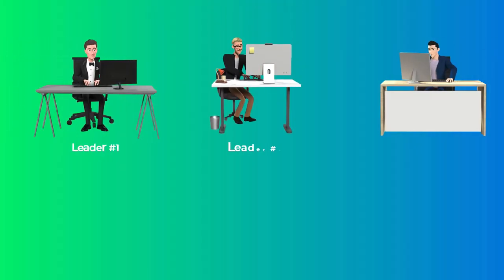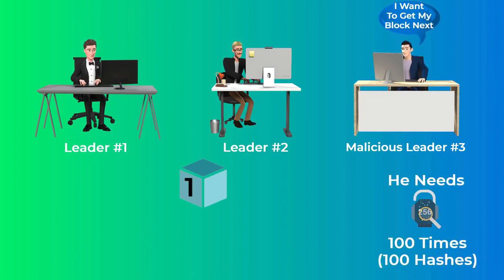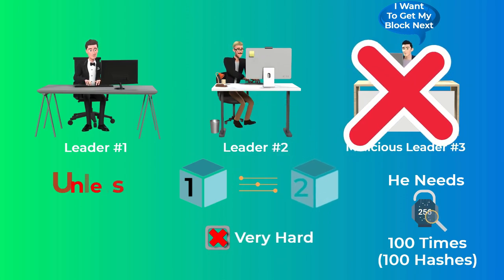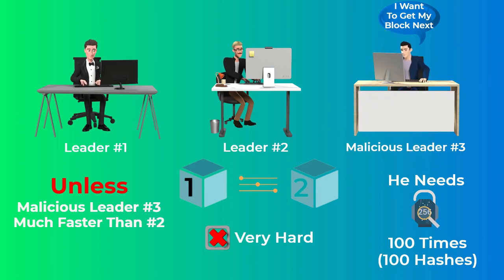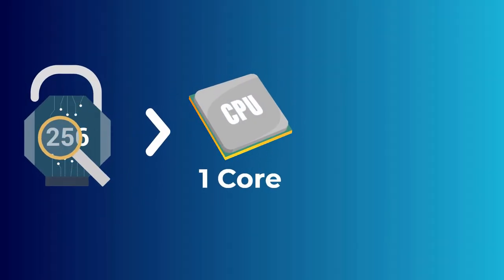Since you generated the 100 hashes correctly, this indicates you waited for two slots before producing your block. If a malicious leader wants to produce his block before the second leader, he would need to run the hash function 100 times and generate 100 hashes to prove he waited his turn — all before the second leader starts producing his block, which in reality is very hard to do unless the third leader is much faster and the second leader has very bad network connectivity.